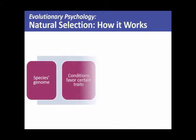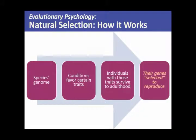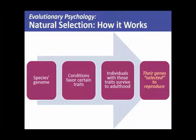We're going to rely heavily on natural selection. In case you're not familiar with it — I've noticed many students have had minimal training in evolution. The idea is that you've got your species genome, all the genes that normally go along with being human. There are conditions that favor certain traits, and individuals who have those desirable traits are more likely to survive to adulthood. That means they're more likely to reproduce and get those genes into the future.